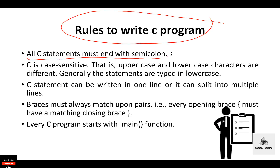Finally, the rules to write a C program: every C statement must end with a semicolon. C is a case-sensitive language — uppercase and lowercase characters are different. Generally, statements are typed in lowercase only. A C statement can be written on one line or split into multiple lines. Braces must always match in pairs — every opening brace must have a matching closing brace. And every C program starts with the main function. These are the basic rules to write a C program.